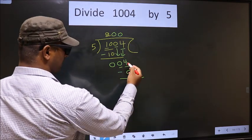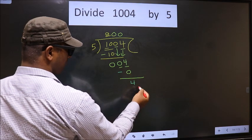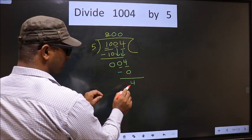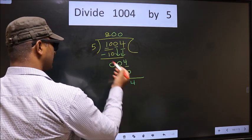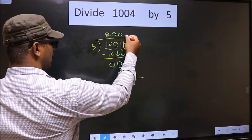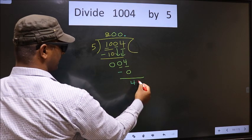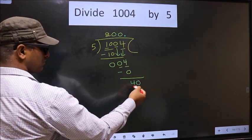Now you subtract. 4 minus 0, 4. Over here we did not bring any number down, and 4 is smaller than 5. So now you can put a dot and take 0 here. So 40.